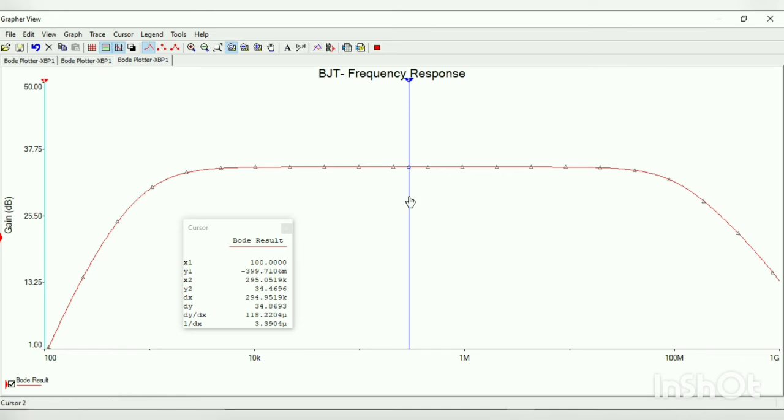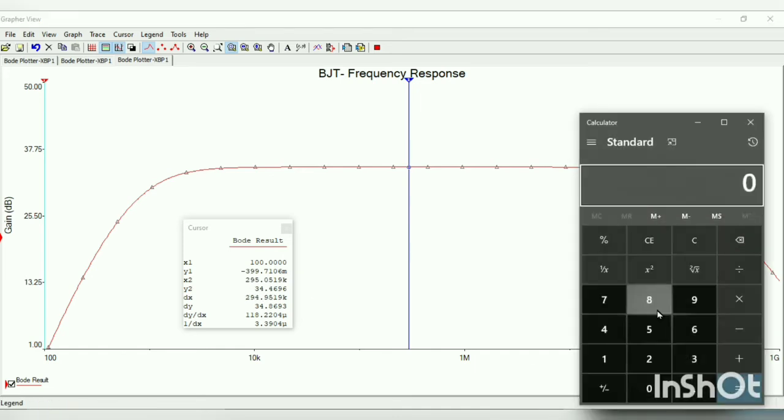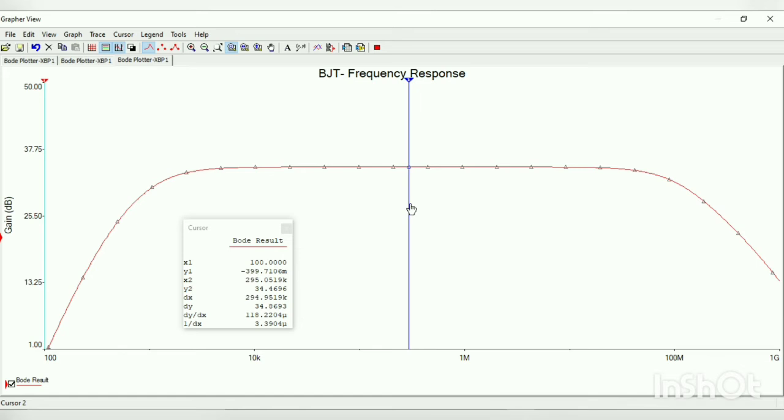Now for calculating our bandwidth, we need to know low frequency and high frequency. For knowing it, we need to calculate our cutoff. For calculating cutoff, minus 3 dB from our mid-band gain. That is 34.4696 minus 3 gives 31.4696. That is our cutoff. Moving the cursor to that place, just right-click, set value, and enter 31.46.